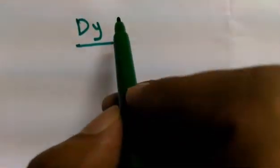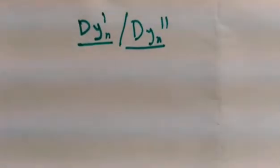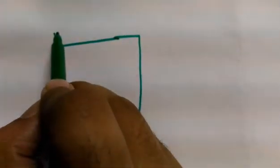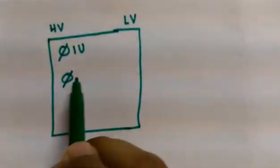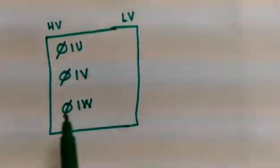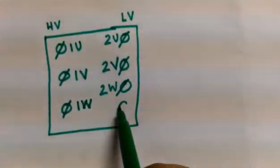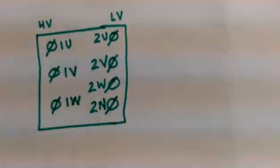So we have seen how to determine the vector group of a star-star transformer. Now in this portion we will see how to determine the vector group of a delta-star transformer. A delta-star transformer has two main vector groups: Dyn1 or Dyn11. The left-hand side is the high voltage with terminals 1U, 1V, 1W, and the right-hand side is the low voltage with terminals 2U, 2V, 2W, and 2N.